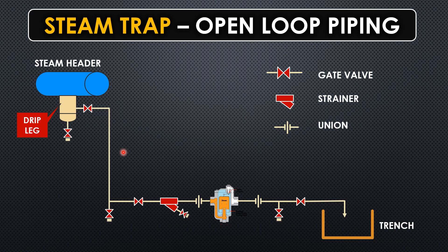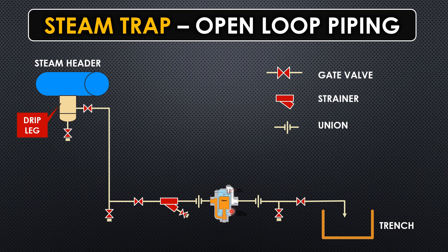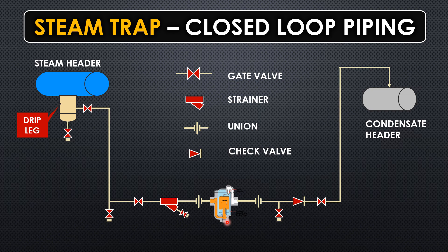These piping arrangements are predominantly available in most industries. Generally most steam traps are constructed for sizes less than two inches, but the same philosophy can be applied for two-inch and above, provided dismantling of those items is considered. The steam traps are sized by the process team, who provide input to mechanical engineers who then procure the steam trap. This is the fundamental piping design requirement for steam trap piping design.